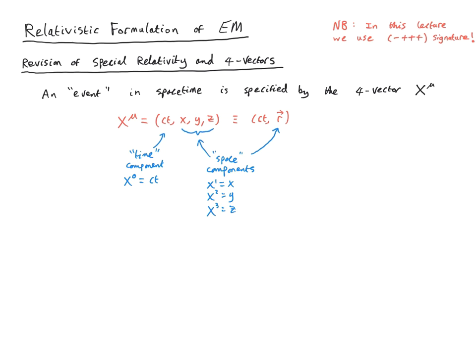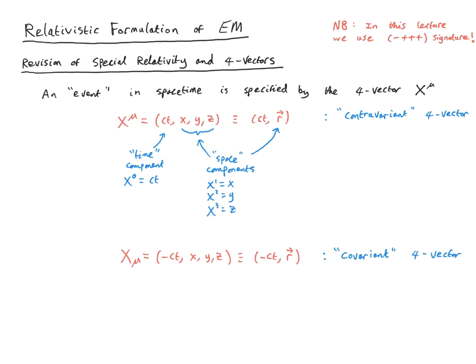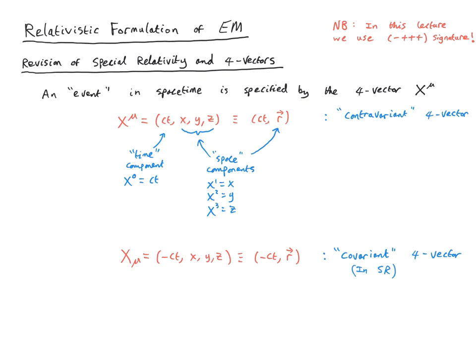This is a so-called contravariant four vector. There's an alternative type called a covariant four vector which is very closely related. In special relativity, the covariant four vector takes a very simple form: the time-like zeroth component picks up an additional minus sign. There is a deeper technical distinction between contravariant and covariant four vectors, but in special relativity the only difference is that the time component gets this extra minus sign.